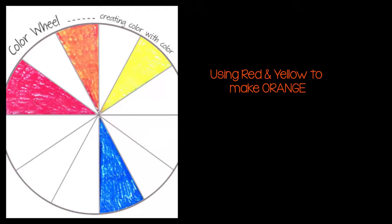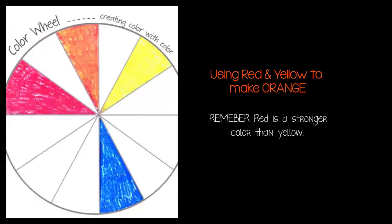Now that we have our primary colors set, let's go back and add secondary, beginning with orange. To create orange, mix yellow and red. Remember, red is a stronger color than yellow, so it will take significantly more yellow to create orange than it will red. Begin with yellow and add a small amount of red.